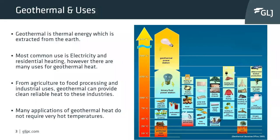Geothermal is defined as thermal energy extracted from the earth. The most common uses are electricity and residential heating. However, there are many uses for geothermal — from agricultural to food processing and industrial uses. Geothermal can provide clean, reliable heat to these industries. Many applications don't require very hot temperatures; for example, agriculture only needs temperatures in the 40–50 degree range to heat greenhouses for growing.